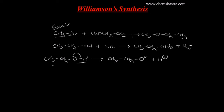The heterolytic bond break gives us CH₃CH₂O⁻ and H⁺ is set free as a proton. If I have two molecules of alcohol, I will get two alkoxide ions and two H⁺ ions. In the second step, sodium metal undergoes oxidation to give Na⁺ with liberation of one electron.